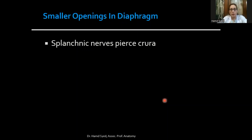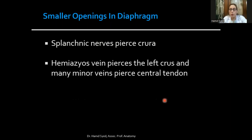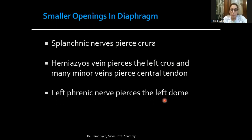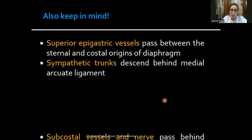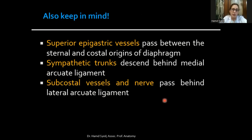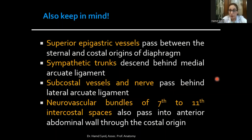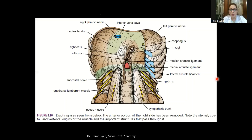The smaller openings transmit additional structures: splanchnic nerves pierce the crura; the hemiazygos vein pierces the left crus; minor veins pierce the central tendon; the left phrenic nerve pierces the left dome. Superior epigastric vessels pass between the sternal and costal origins. Sympathetic trunks descend behind the medial arcuate ligament; subcostal vessels and nerves pass behind the lateral arcuate ligament; and neurovascular bundles of the 7th to 11th intercostal spaces pass into the anterior abdominal wall through the costal origin.